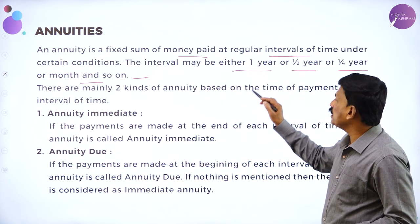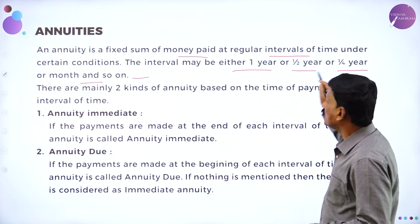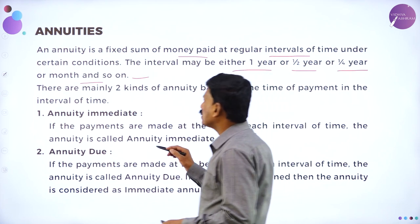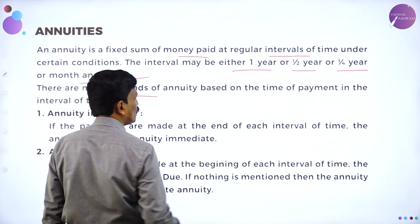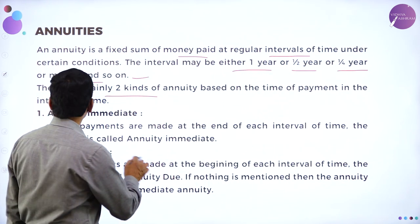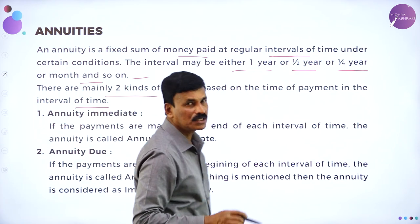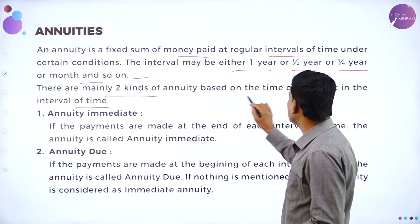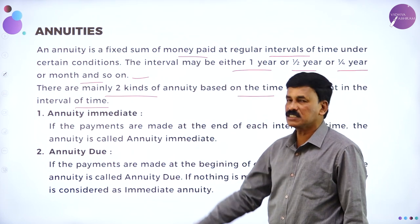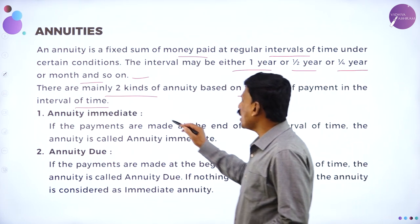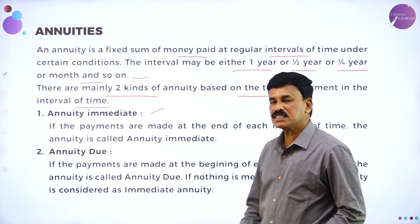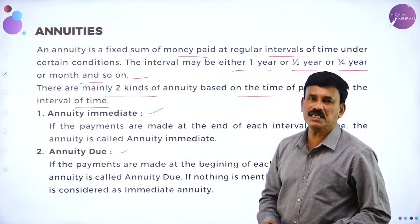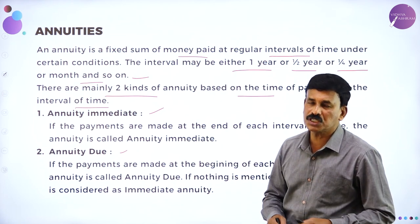There are mainly two types of annuities based on the payment interval of time. The first one is annuity immediate and the second one is called annuity due.